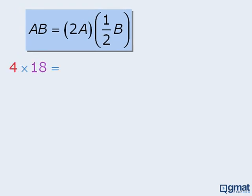For example, rather than multiply 4 times 18 in our head, we can transform the 4 and 18 into more manageable numbers by first taking the 4 and doubling it, and then taking the 18 and halving it. When we do this, we get the product 8 times 9, which equals 72.